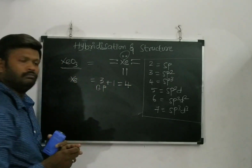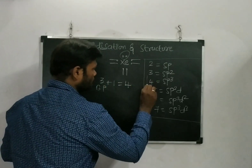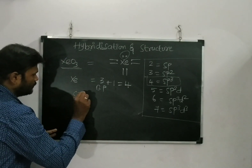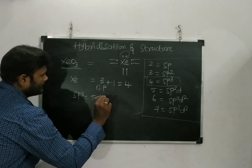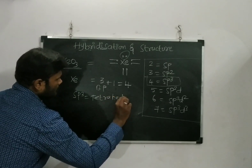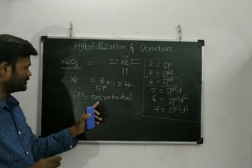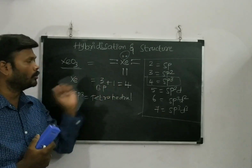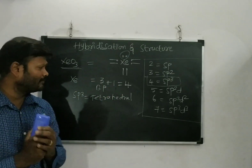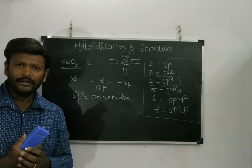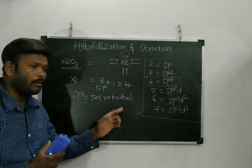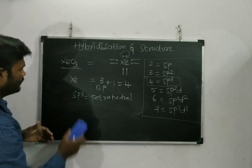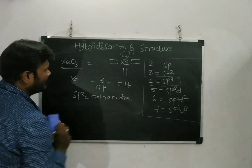So the total is four — three bond pairs plus one lone pair. If the total is four, what is the hybridization? If total is four, that is SP3, and the geometry expected would be tetrahedral. But it has a lone pair of electrons, and because of that lone pair the structure gets contracted from tetrahedral to something else.